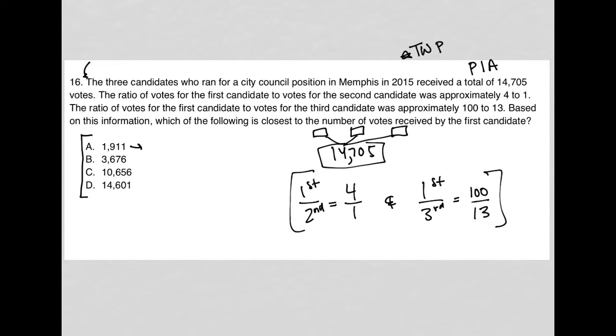So for instance, if the first candidate received 1,911 votes, that would mean that the second candidate had to have received one-fourth of that, if that makes sense. For the first candidate, it's four times the number of votes of the second candidate. So I'm going to go to my calculator and type in 1911 and divide by four. And I basically get 477 with the decimal. 477.75 for the second candidate.